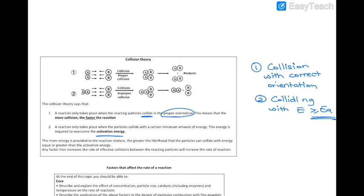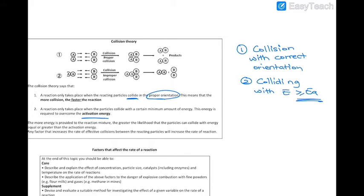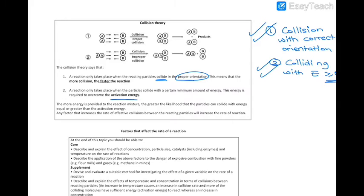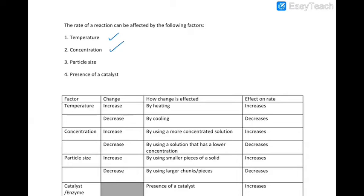The more energy you give, the more likely that energy condition is to occur, and the more collisions you allow to happen, the more this condition is going to occur. For this unit, we're going to look at the factors that affect the rate of a reaction — in other words, what affects successful collisions. We'll be looking at the effect of temperature, concentration, particle size, and catalyst on rate of reaction.